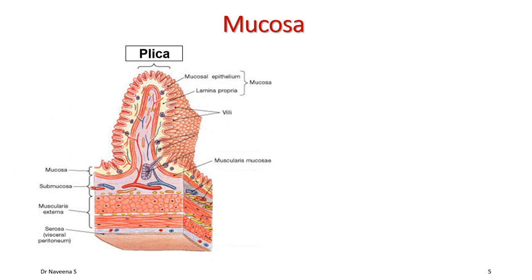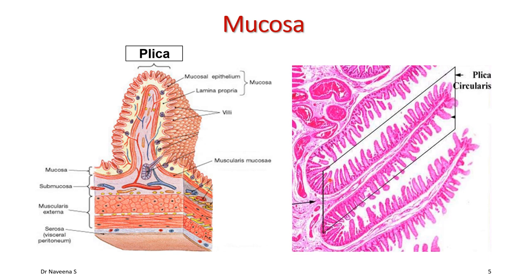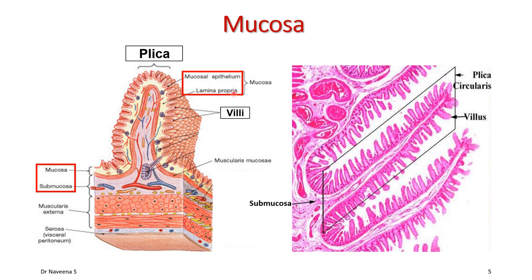Focusing on one plica circularis, the H&E stained tissue shows that each plica is actually formed by an underlying submucosal projection into the lumen, so that the mucosa covering it is thrown into a fold. Each plica is composed of mucosa and submucosa seen in its center. Further, the epithelial layer of mucosa is thrown into folds by underlying lamina propria projections; such projections are called villi.